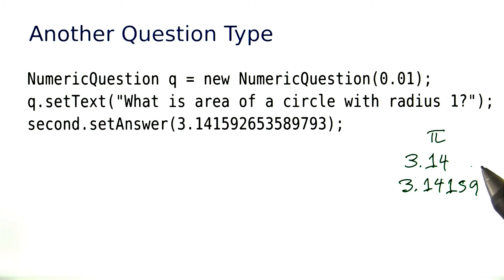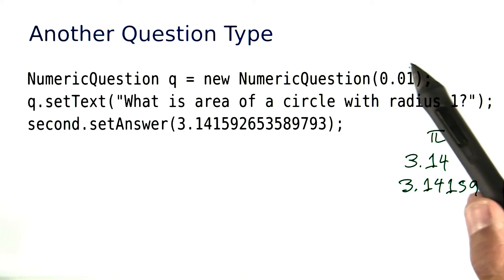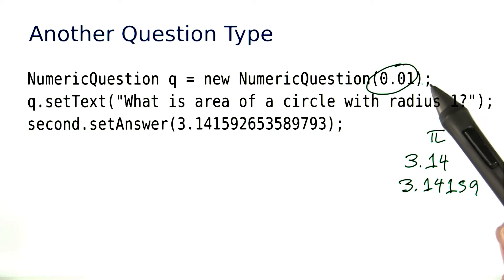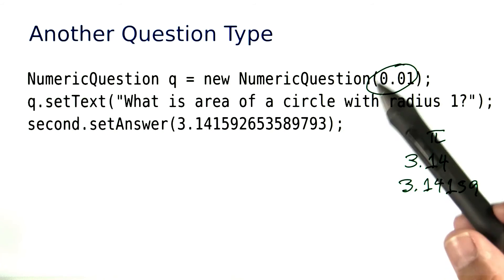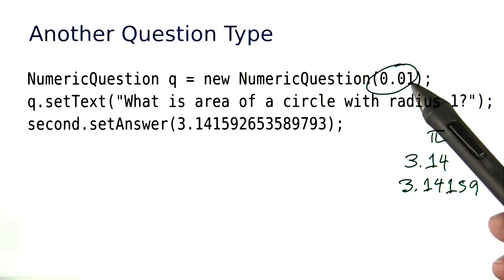Either one of those answers should be fine. In fact, we'll take any answer that's up to 0.01 away from the correct answer. In a different numeric question, we might use a different tolerance.